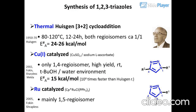Thermal Huisgen 3+2 cycloaddition at 80 to 120 degrees Celsius, 12 to 24 hours, gives both regioisomers. ΔH‡ equals 24 to 26 kilocalories per mole.